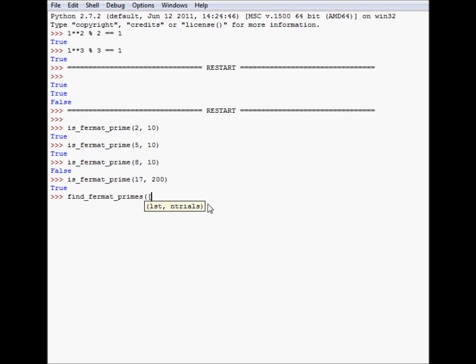And the second function that you will need to implement is Find Fermat primes. The first argument is a list of numbers, and this has to be implemented recursively. Find Fermat primes, so it goes for the list of numbers, and the second number is the number of trials, and finds all of the prime numbers by applying is Fermat prime. And the second argument is the number of trials, the second argument to is Fermat prime.